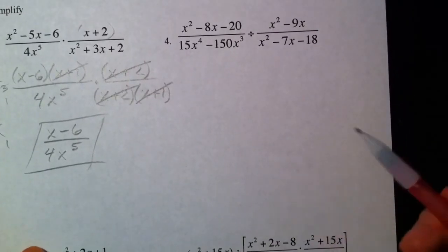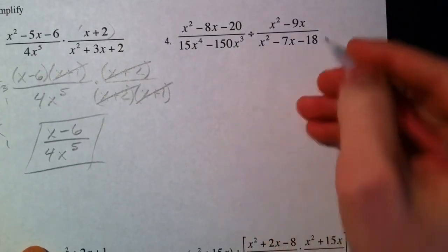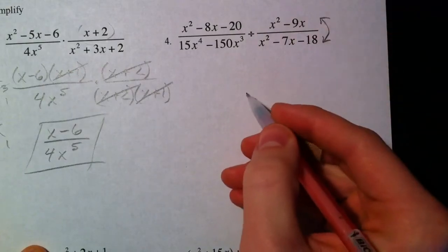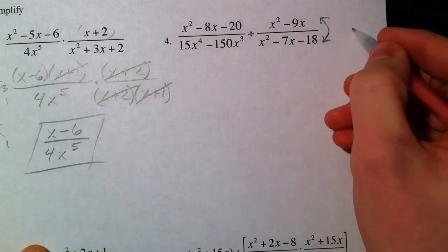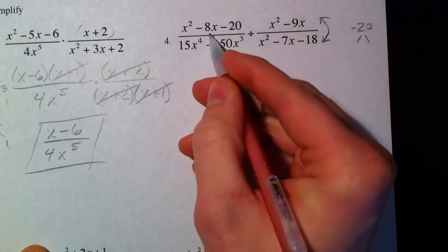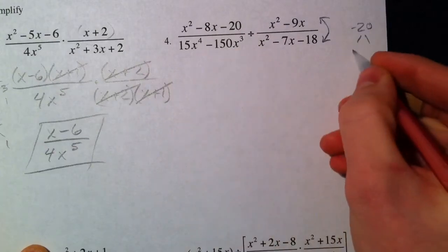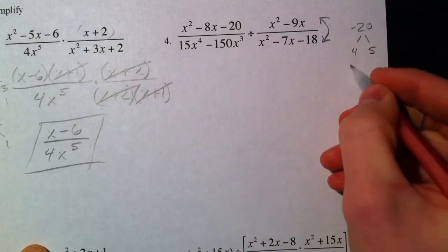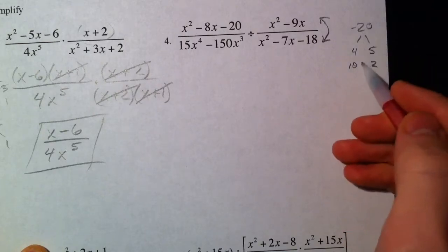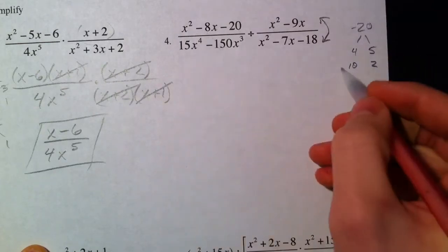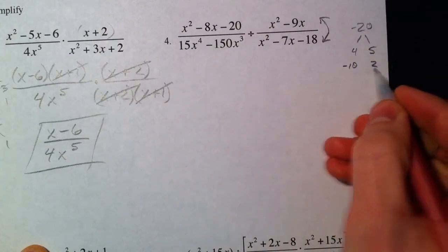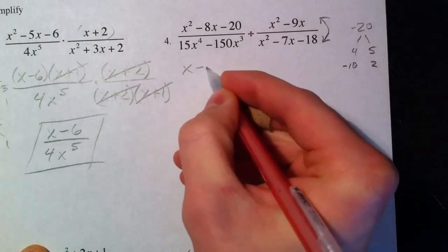All right, so next one, our first division problem. So what I do is I factor because the rule of the day is factoring, and while I'm factoring I flip our fraction over. So what multiplies to negative 20 and adds to negative 8? We've got 4 and 5 multiply to 20, 10 and 2 multiply to 20, but because one has to be positive and one negative, we need our negative 8 here. So I'm going to use negative 10, positive 2: X minus 10, X plus 2.